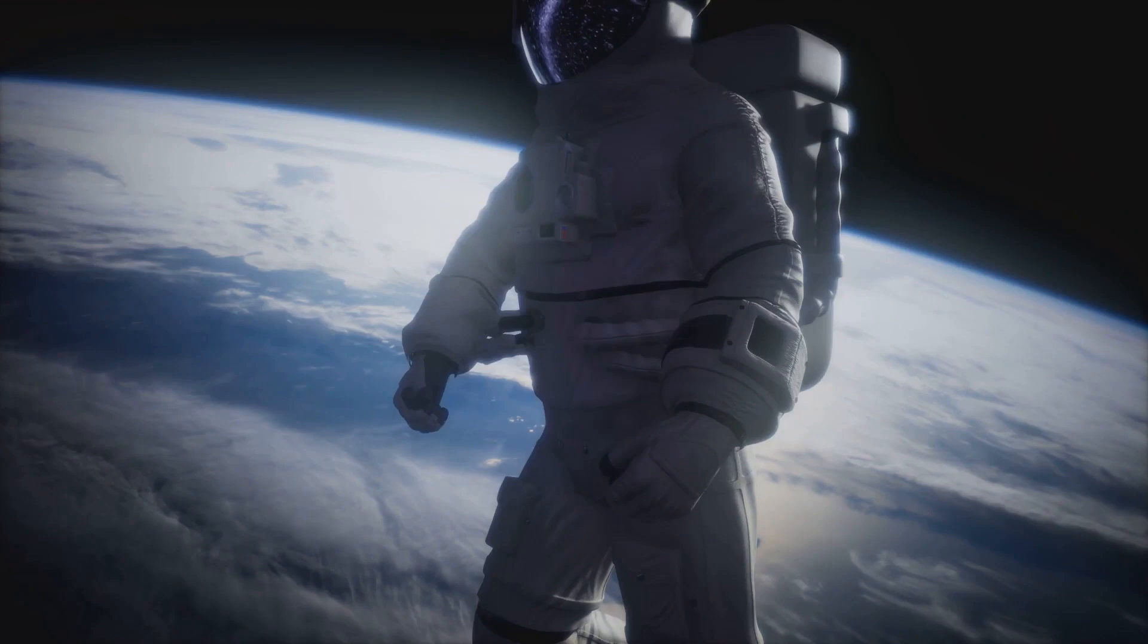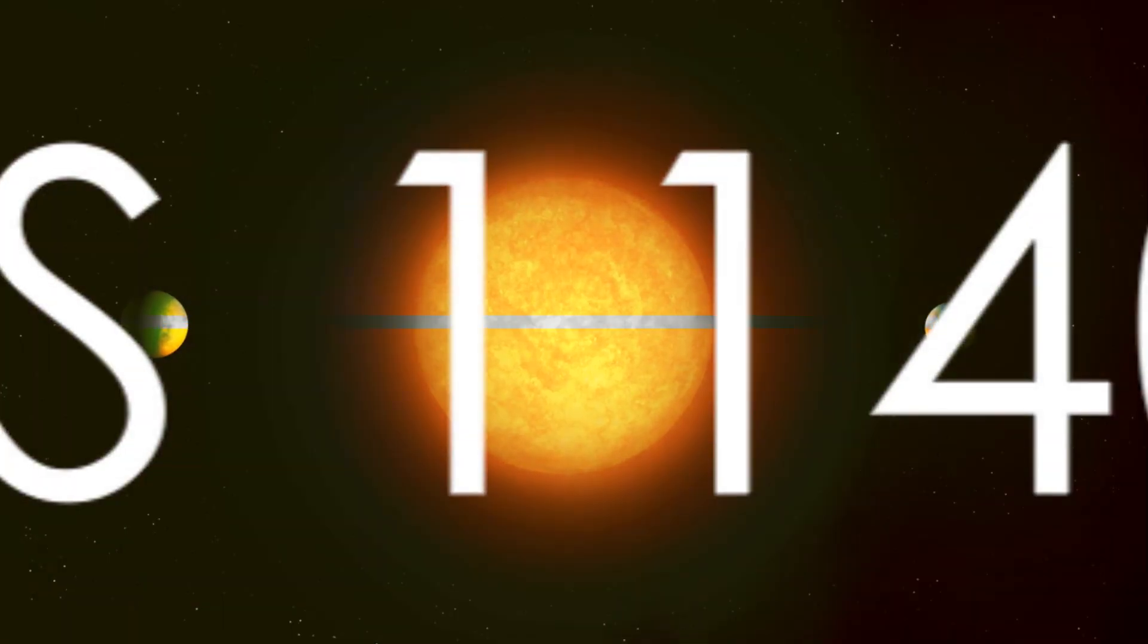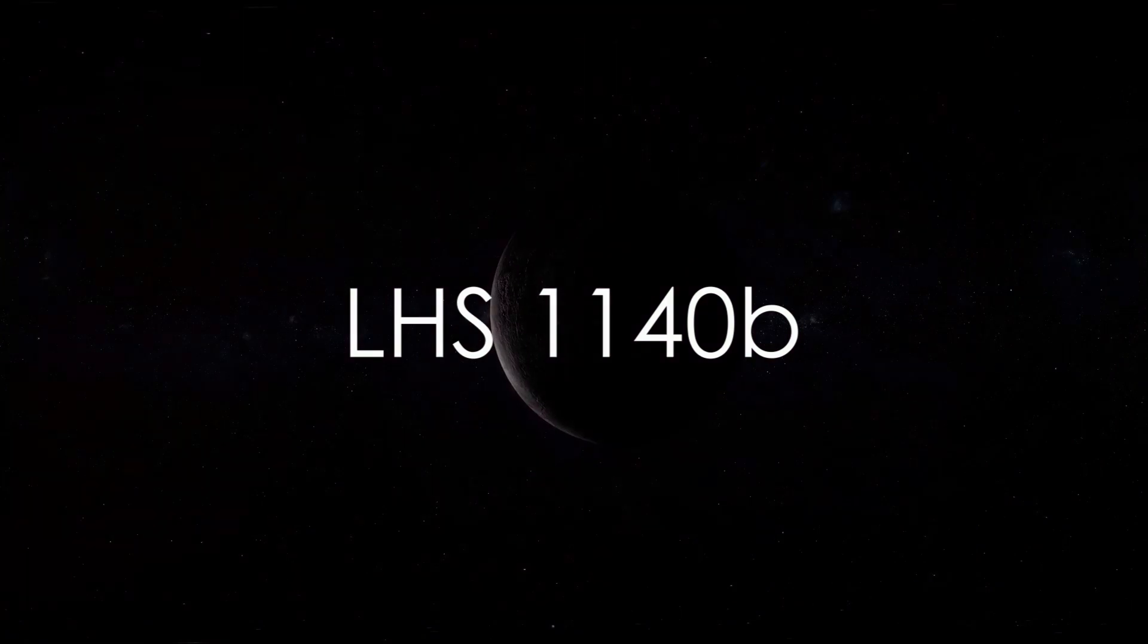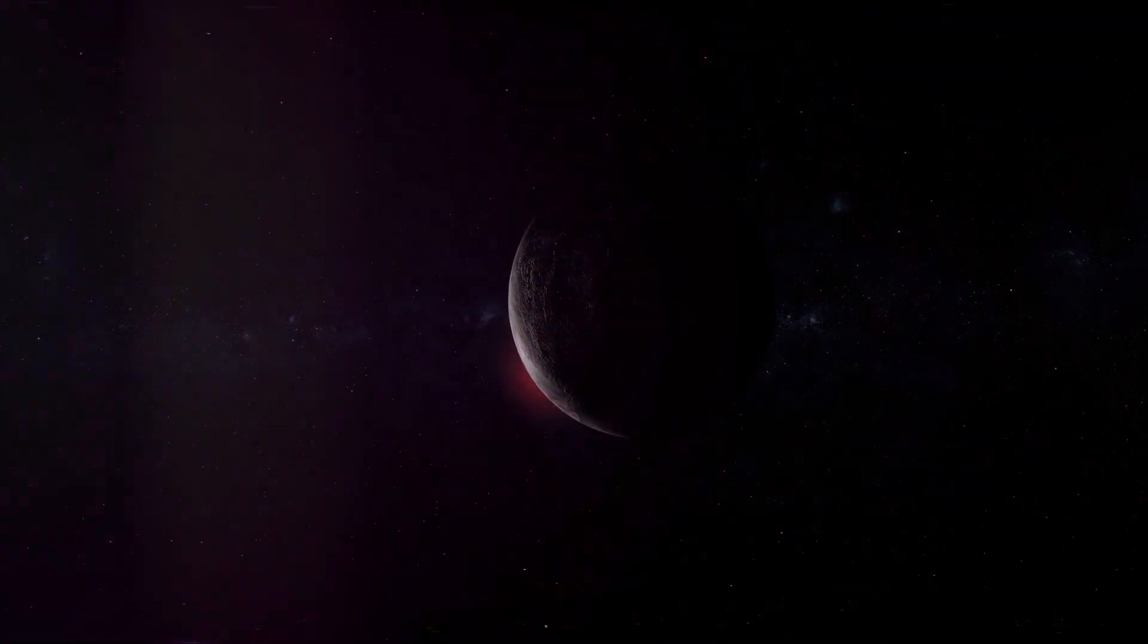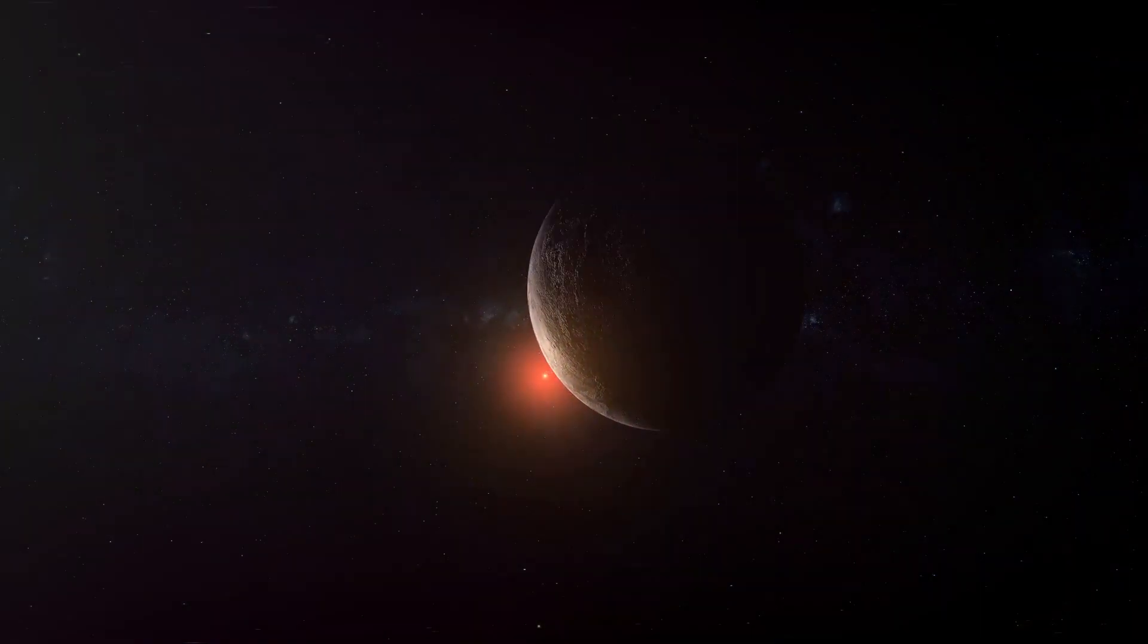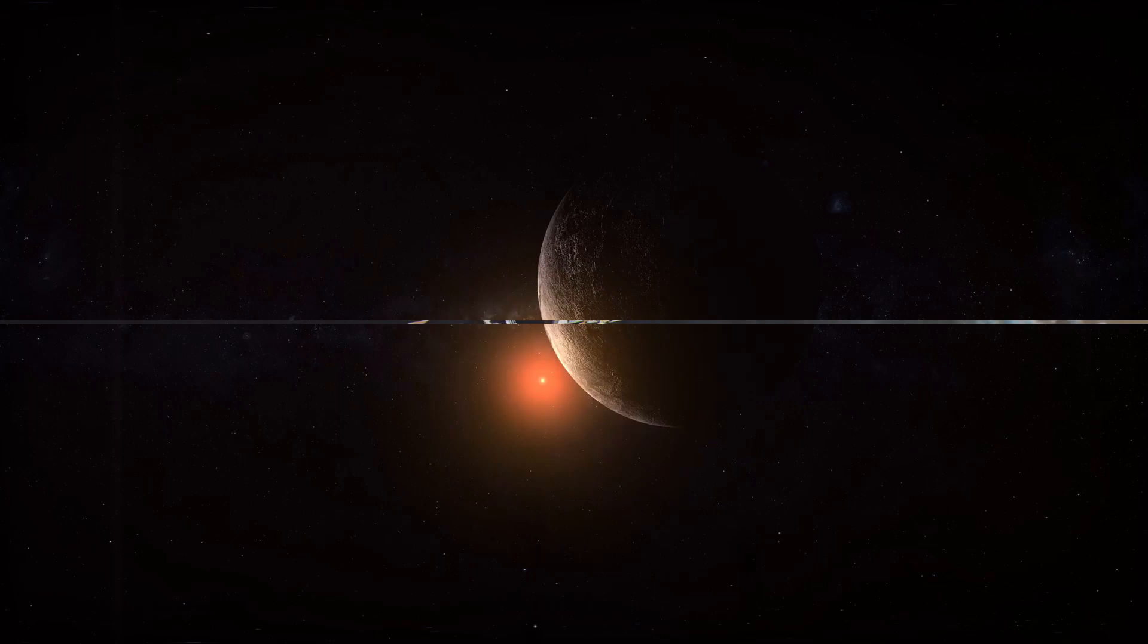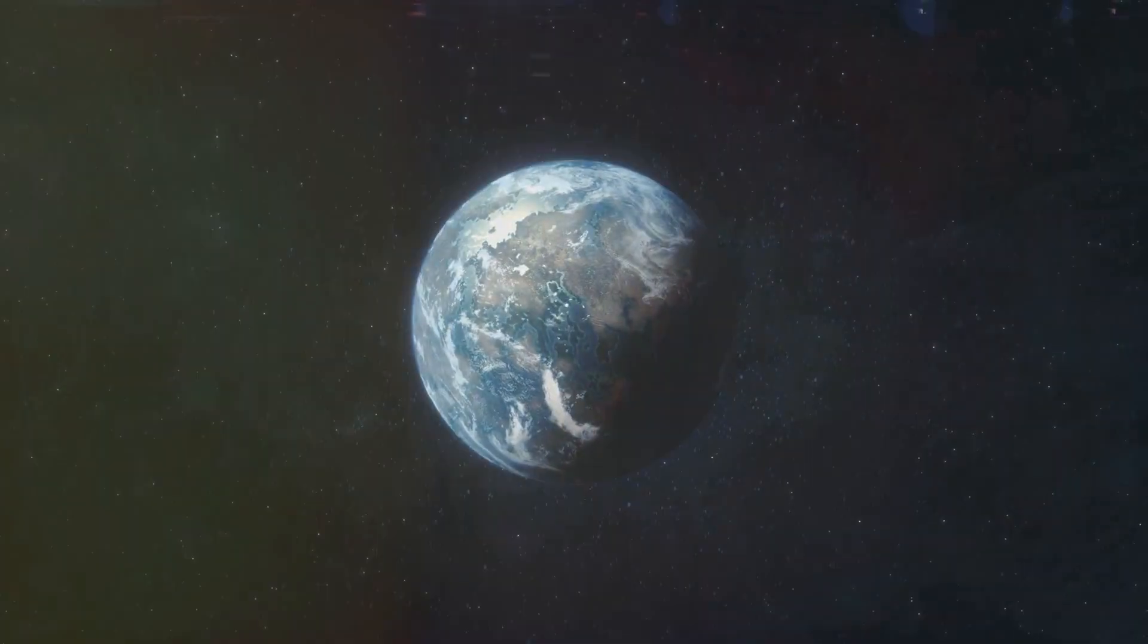Number four introduces us to Trappist 1e. This exoplanet is part of a unique system of seven planets that orbit a single star. It's similar in size to Earth and could potentially have liquid water on its surface. Our third contender is LHS 1140b. This super-Earth exoplanet orbits a red dwarf star and could potentially have a more habitable climate than other similar planets due to its larger size and denser atmosphere.